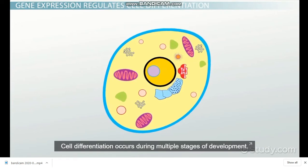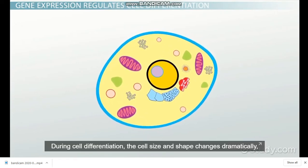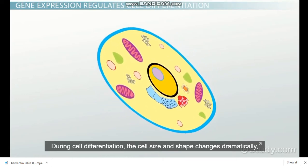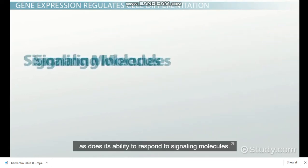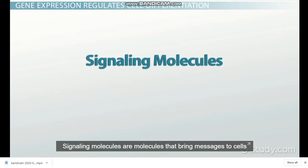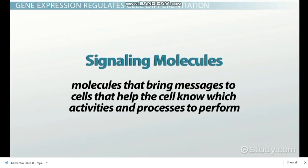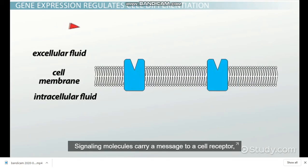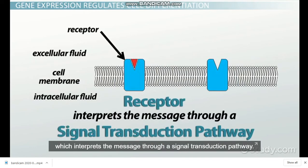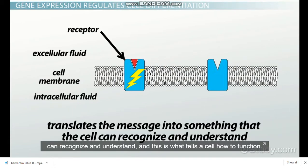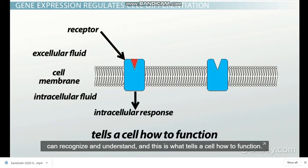Cell differentiation occurs during multiple stages of development. During cell differentiation, the cell size and shape changes dramatically, as does its ability to respond to signaling molecules. Signaling molecules are molecules that bring messages to cells that help the cell know which activities and processes to perform. They carry a message to a cell receptor, which interprets the message through a signal transduction pathway — translating it into something the cell can recognize and understand, telling the cell how to function.